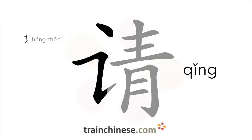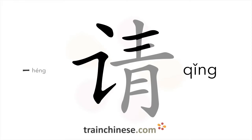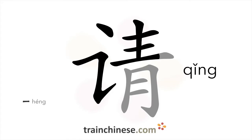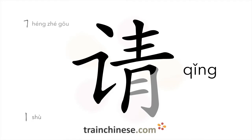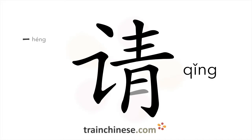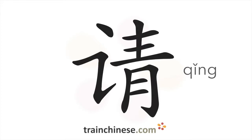The stroke sequence is demonstrated with the following stroke types: 行折体, 行, 行, 树, 行, 树, 行, 行, 行.